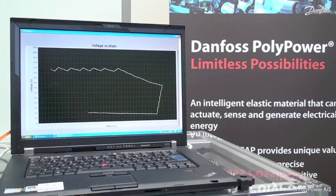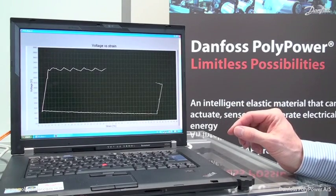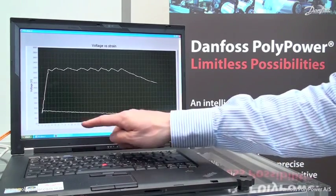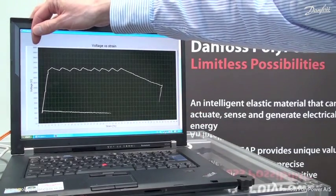On the computer screen you can see how we are actually converting the mechanical energy to electrical energy. On the x-axis we have the strain of the material, while on the y-axis we have the voltage.